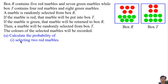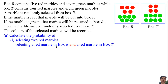Calculate the probability of selecting 2 red marbles. Selecting 2 red marbles means selecting a red marble from Box R and a red marble from Box T. The probability of selecting a red marble from Box R is 5 over 12, because there are 5 red marbles and 5 plus 7 equals 12 total marbles in Box R.